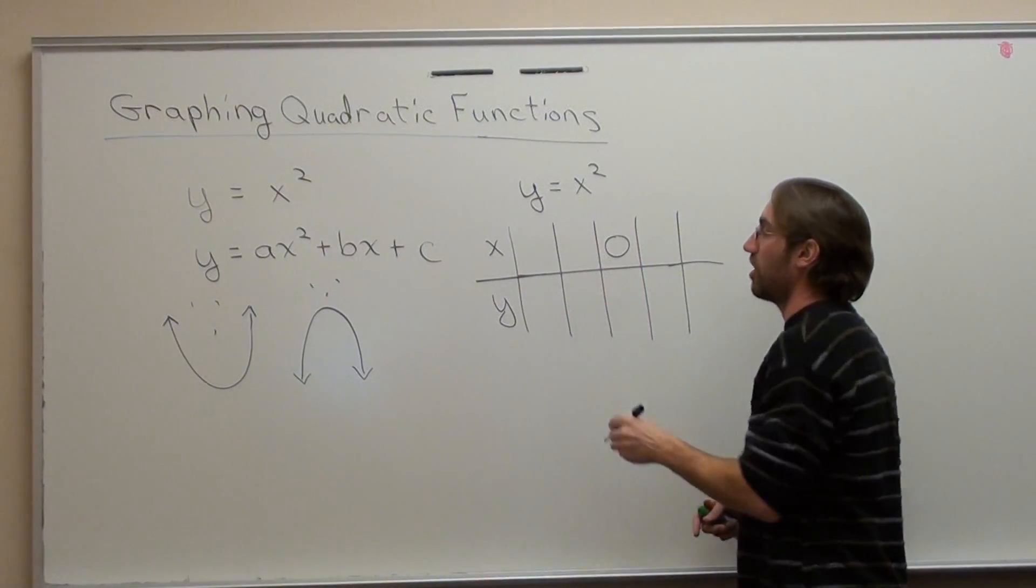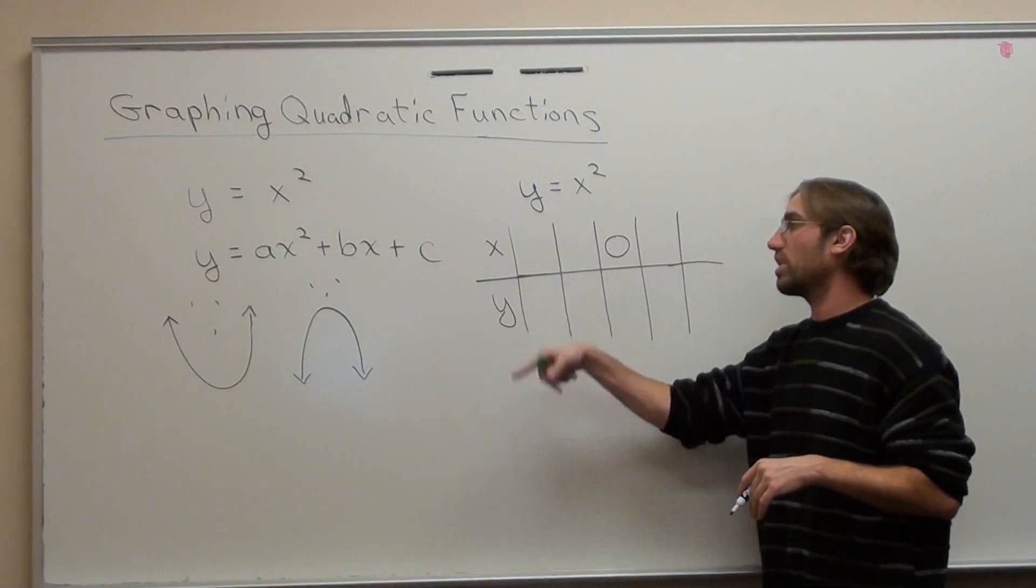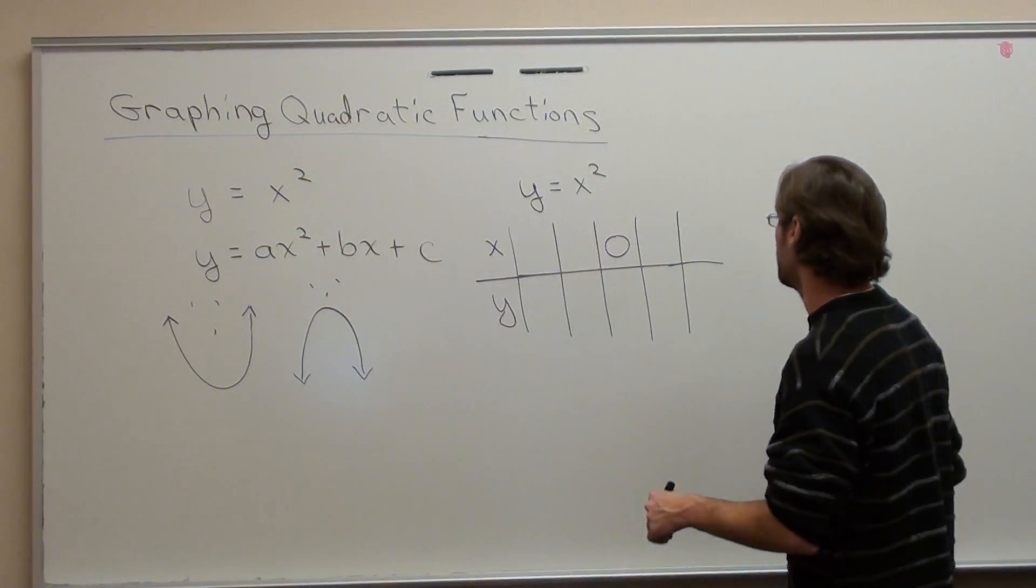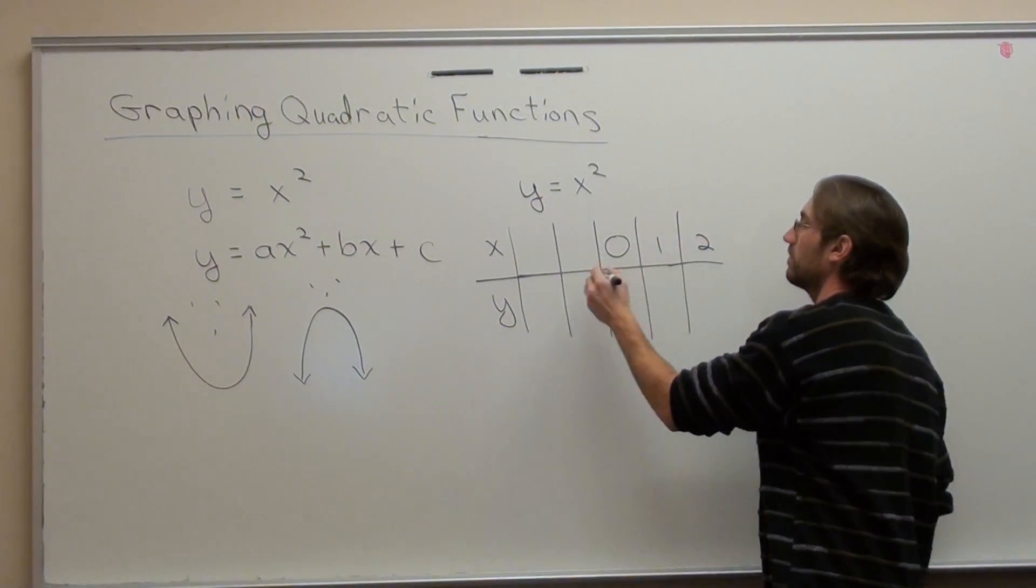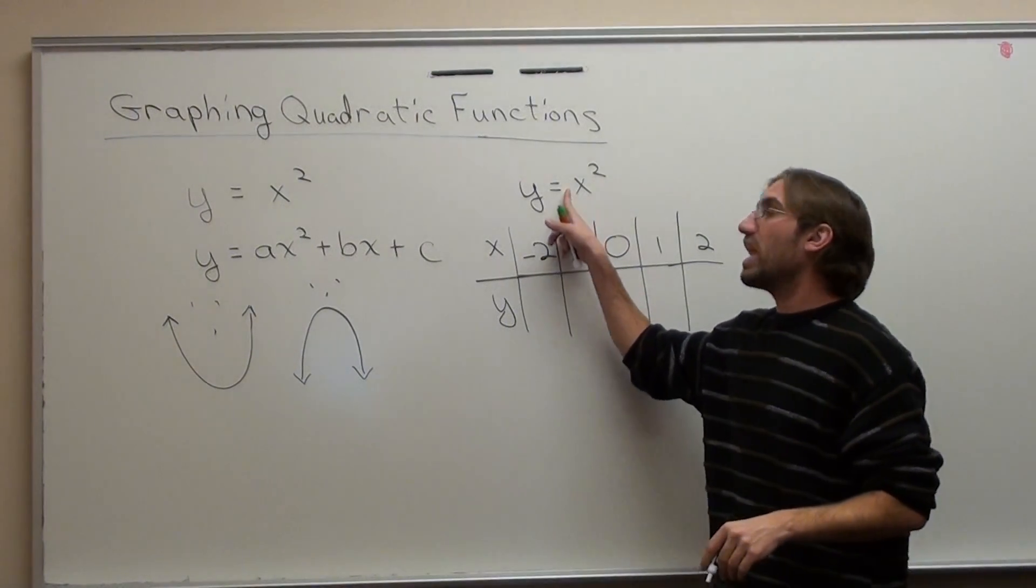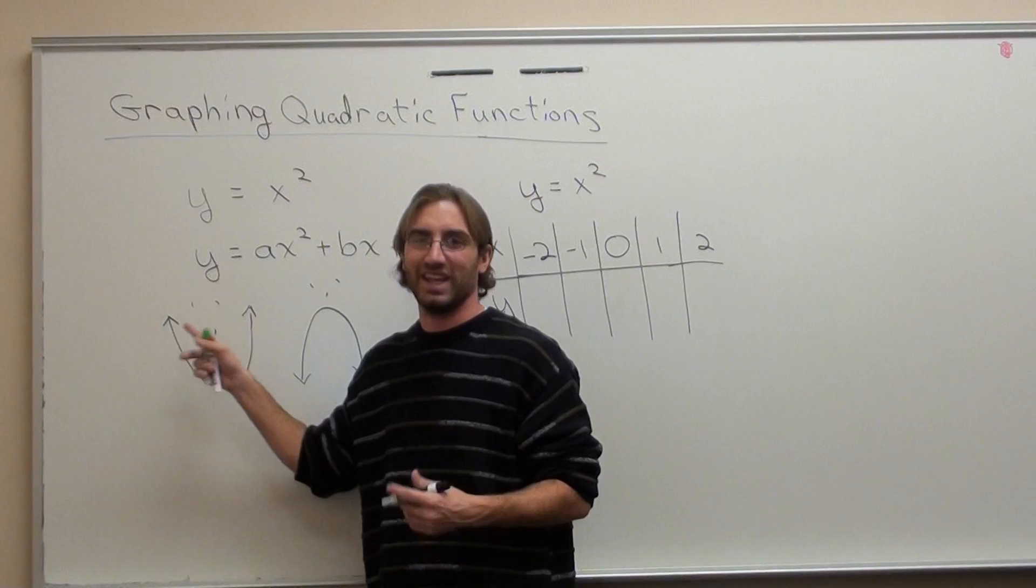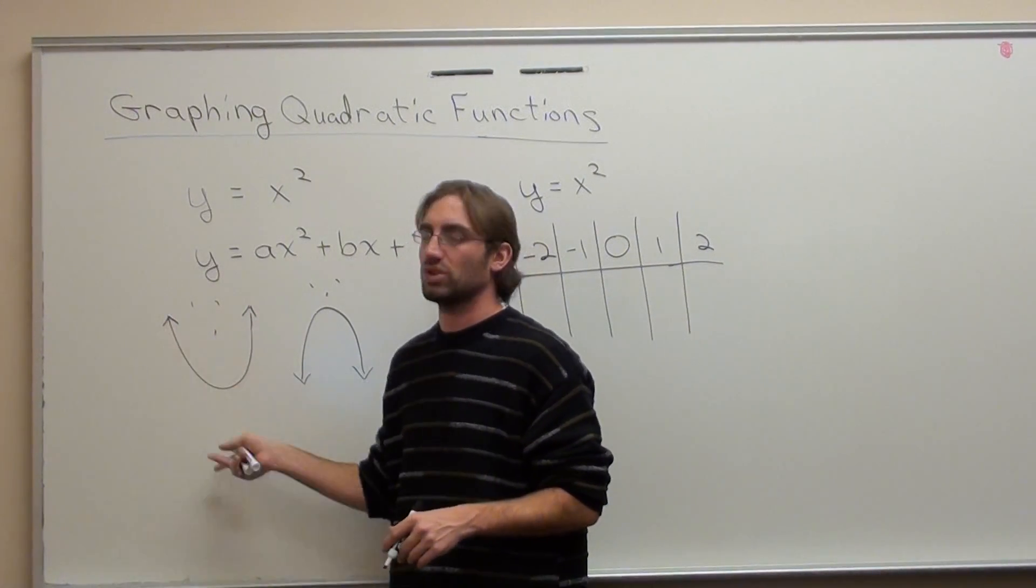So, our middle term for x is going to be 0, and we're just going to go whole numbers to the right and whole numbers to the left. We're going to create ourselves a table. That's basically what we do. Now, there is no negative in front of here, so it's going to be a happy little parabola. That's what you call it. Quadratic function is also known as a parabola.